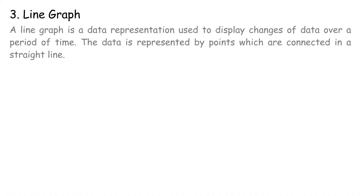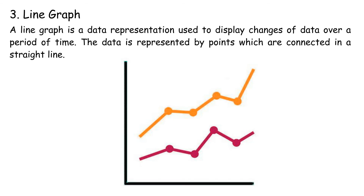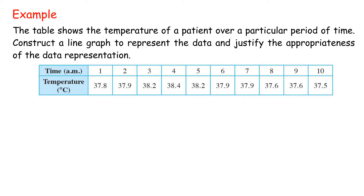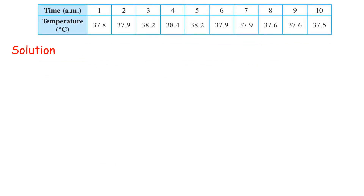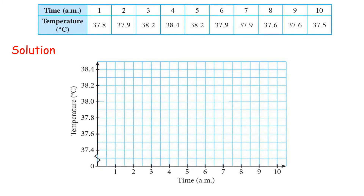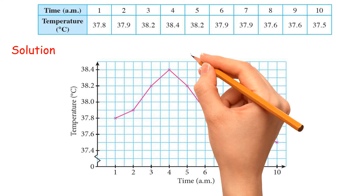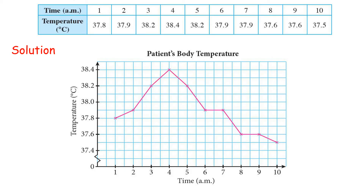Type 3 — Line Graph: A line graph displays changes in data over a period of time. Data is represented by points connected in a straight line. Steps: draw horizontal and vertical axes on a grid, choose a suitable uniform scale, the vertical axis represents data values, the horizontal axis represents time, plot and connect the points, and write the title. This line graph is suitable for displaying changes in a patient's body temperature over a period of 10 hours.